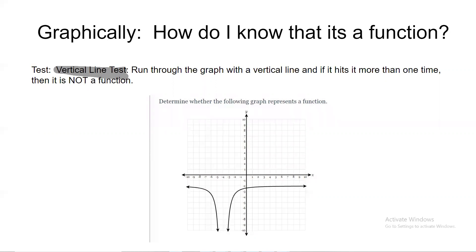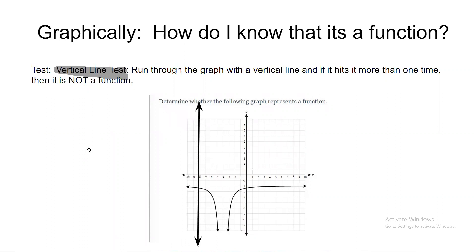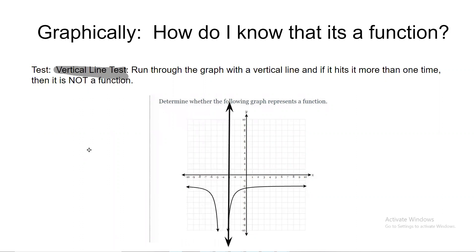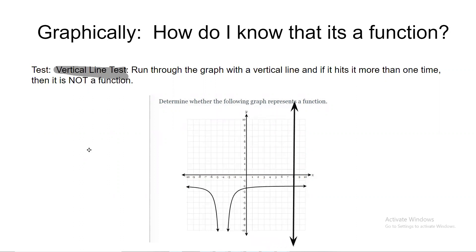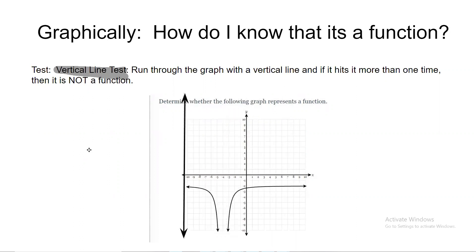The vertical line test: you take a vertical line — like a pencil or ruler — and run it through the graph. If the vertical line touches the function more than once, it's not a function.